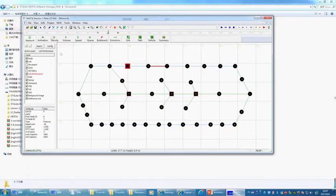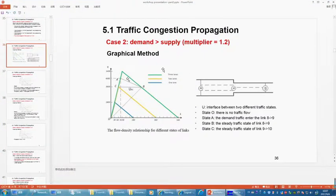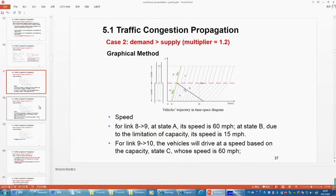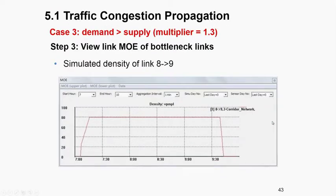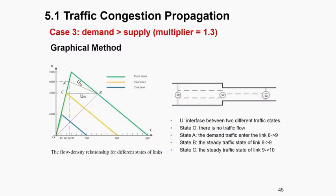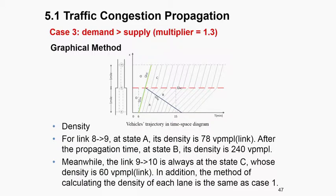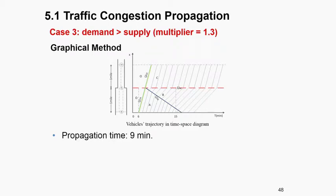Now we can go back to the demand multiplier — from 1.2 to 1.3. By changing the demand multiplier from 1.2 to 1.3, it is quite straightforward. You can see the simulated density and use a graphic method to verify your calculation results. You can have the corresponding traffic queue propagation statistics. The propagation time is 9 minutes. This is listed as one of the homework questions in the learning document.